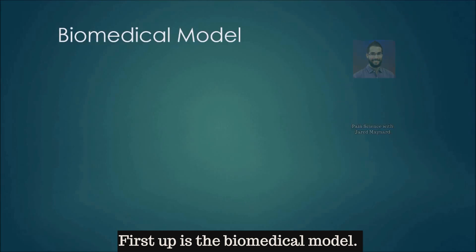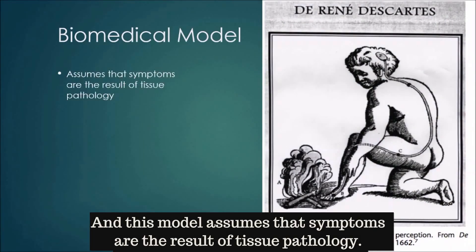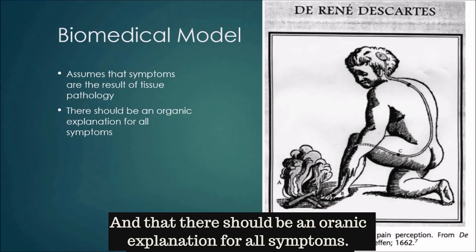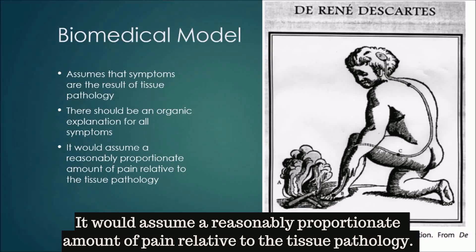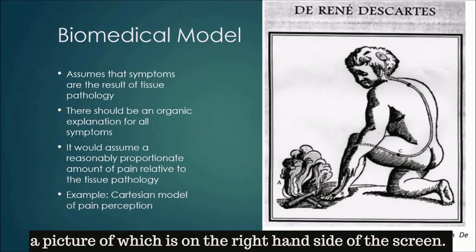First up is the biomedical model. This model assumes that symptoms are the result of tissue pathology and that there should be an organic explanation for all symptoms. It would also assume a reasonably proportionate amount of pain relative to the tissue pathology. An example would be the Cartesian model of pain perception, a picture of which is on the right hand side of the screen.